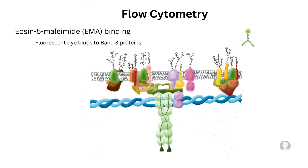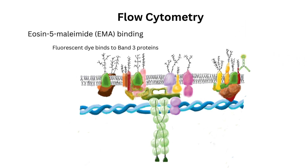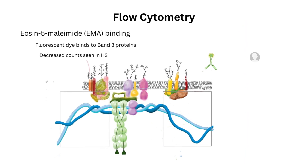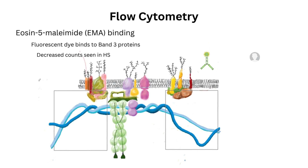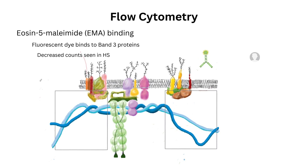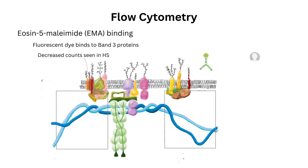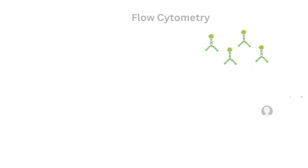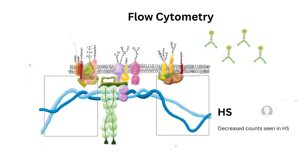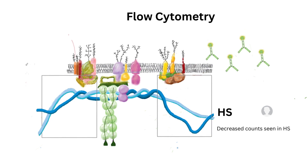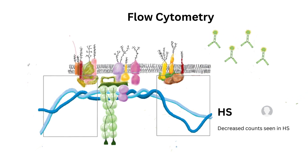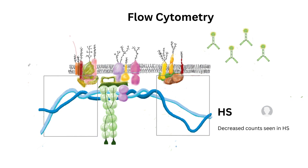The contemporary test is flow cytometry using eosin-5-maleimide (EMA) binding — this fluorescent dye binds to band 3 proteins. In flow cytometry, the fluorescent signals represent cell populations of the target antigen; in this case we are looking at cells with band 3 protein antigen. However, in hereditary spherocytosis, band 3 proteins are missing, so the conjugated dye cannot attach to the antigen and you will see reduced signal detection.